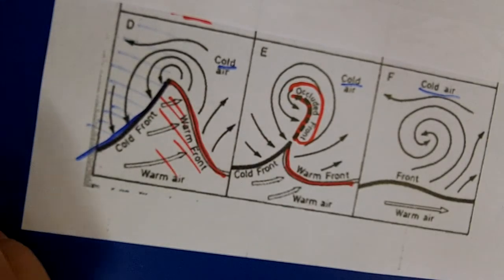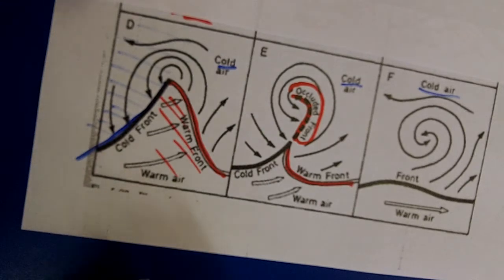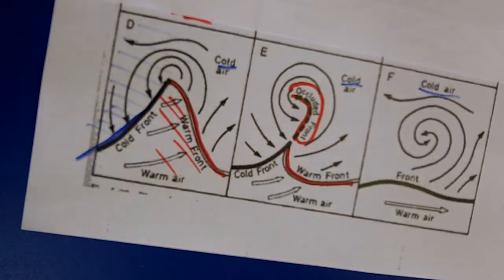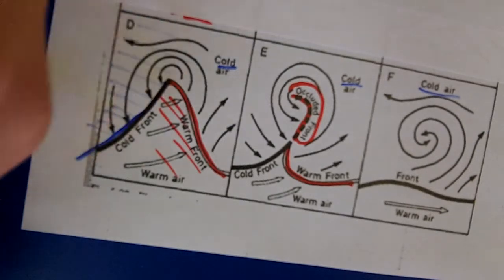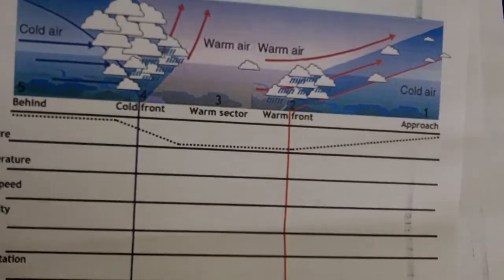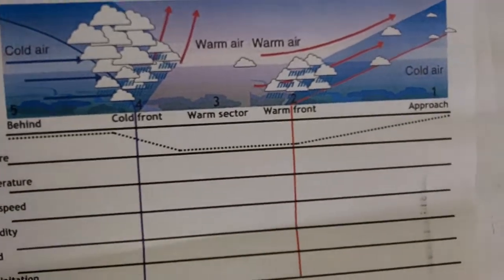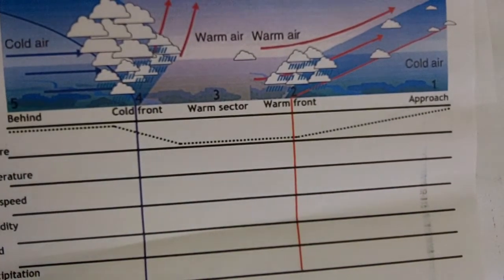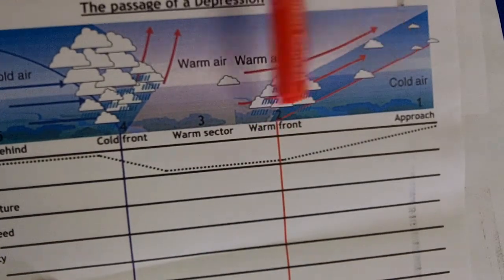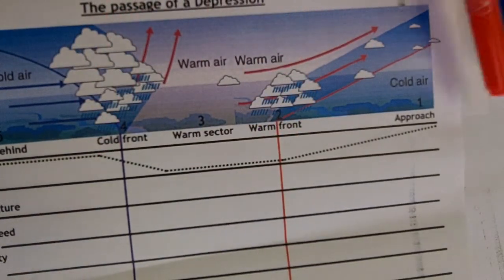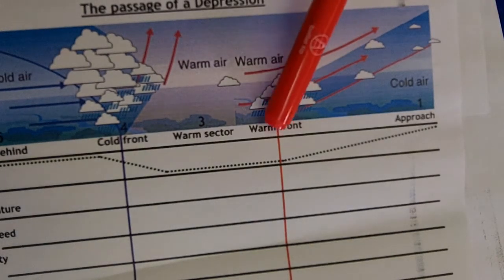That essentially is what a depression looks like and how it forms. Now the key thing to recognize as well is that the weather that occurs is always the same as you move across a depression. The weather's always the same. So the key thing with the depression is that you have frontal rainfall coming across. So your warm front comes first. This is the front of your depression. The warm front comes first. So if you are at a place that is being hit by a depression, the first thing you'll get is a warm front.